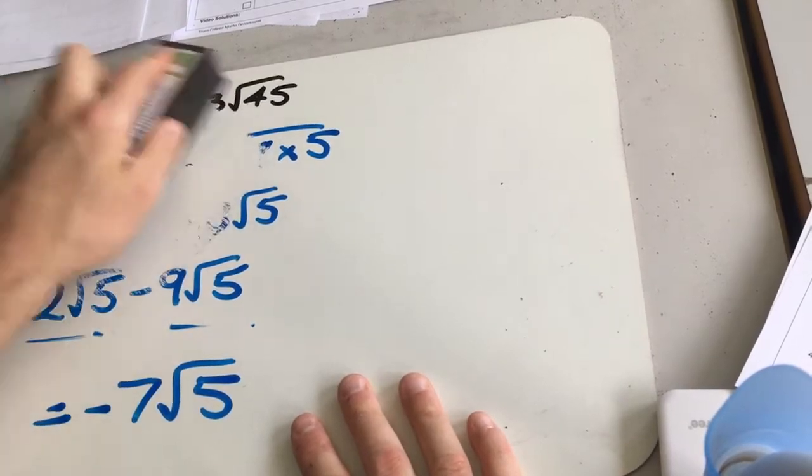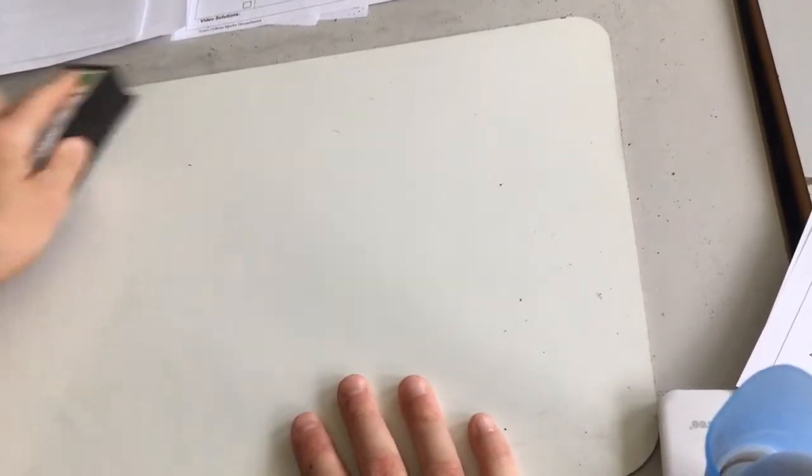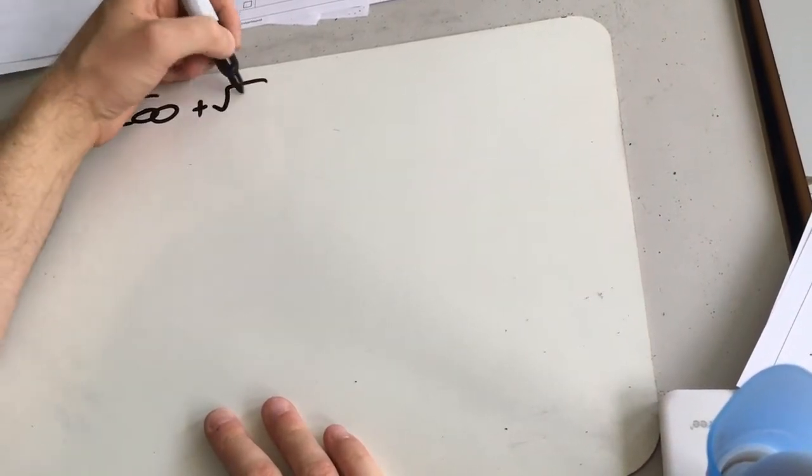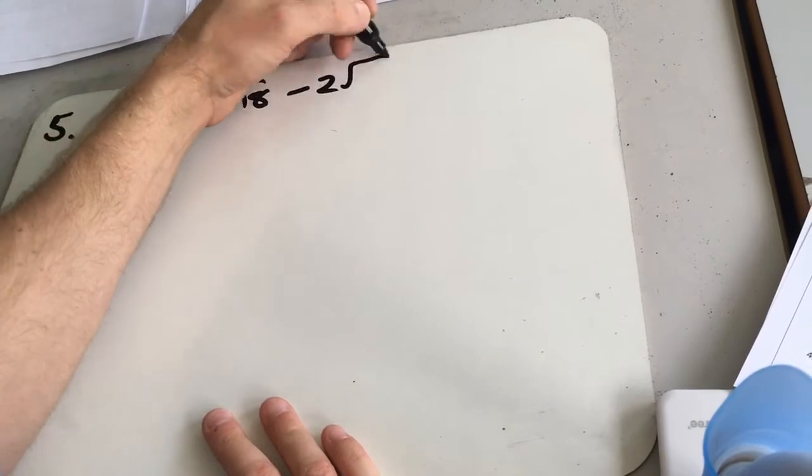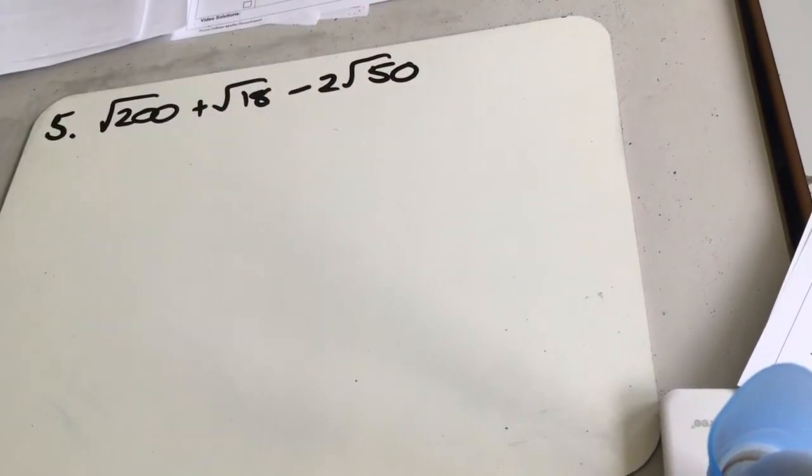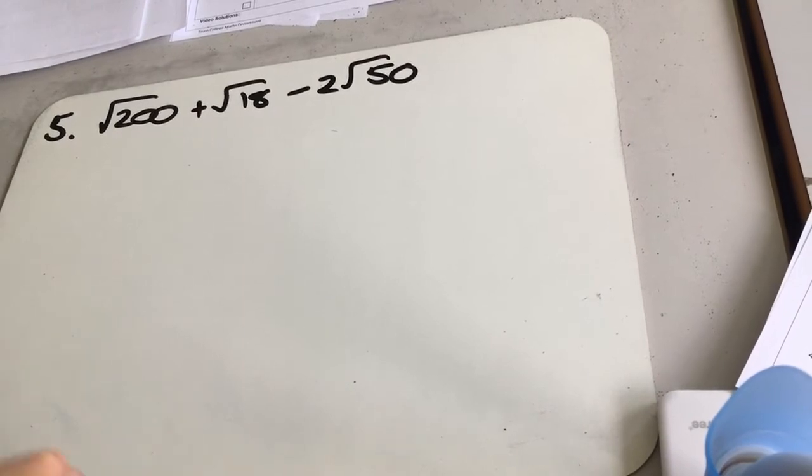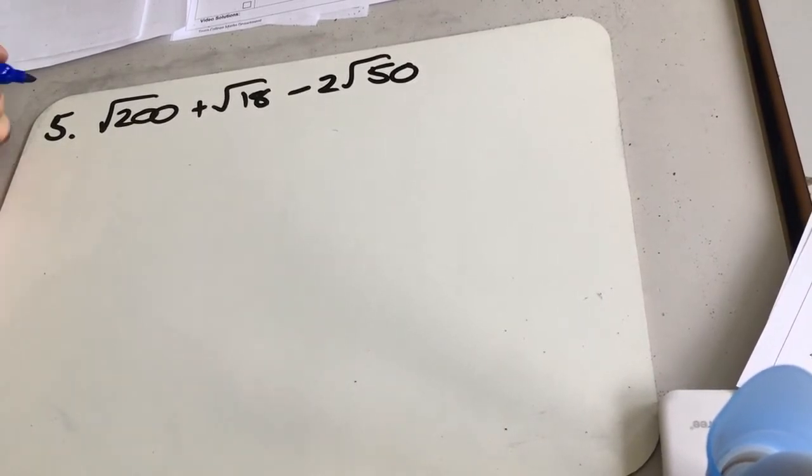Next one. Similar kind of thing. So we've got root 200 plus root 18 minus 2 root 50. So we've actually got 3 different surds that we've got to split up this time. So it might take a little bit longer. Root 200, easiest way to do that one. You can split that up into 4 times 50.